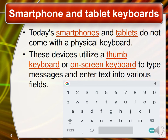Smartphones and tablets also use keyboards as input devices. Today's smartphones and tablets do not come with a physical keyboard like laptops and desktop computers. Instead, these devices utilize a thumb keyboard or on-screen keyboard to type messages and text into various fields. Laptops also have an on-screen keyboard option. If you don't want to use a physical keyboard, you can open the on-screen keyboard to input characters, numbers, or symbols by touching the screen. This is the difference between a soft keyboard and a hard keyboard — in a soft keyboard, you touch the screen for any alphabet, number, or symbol.